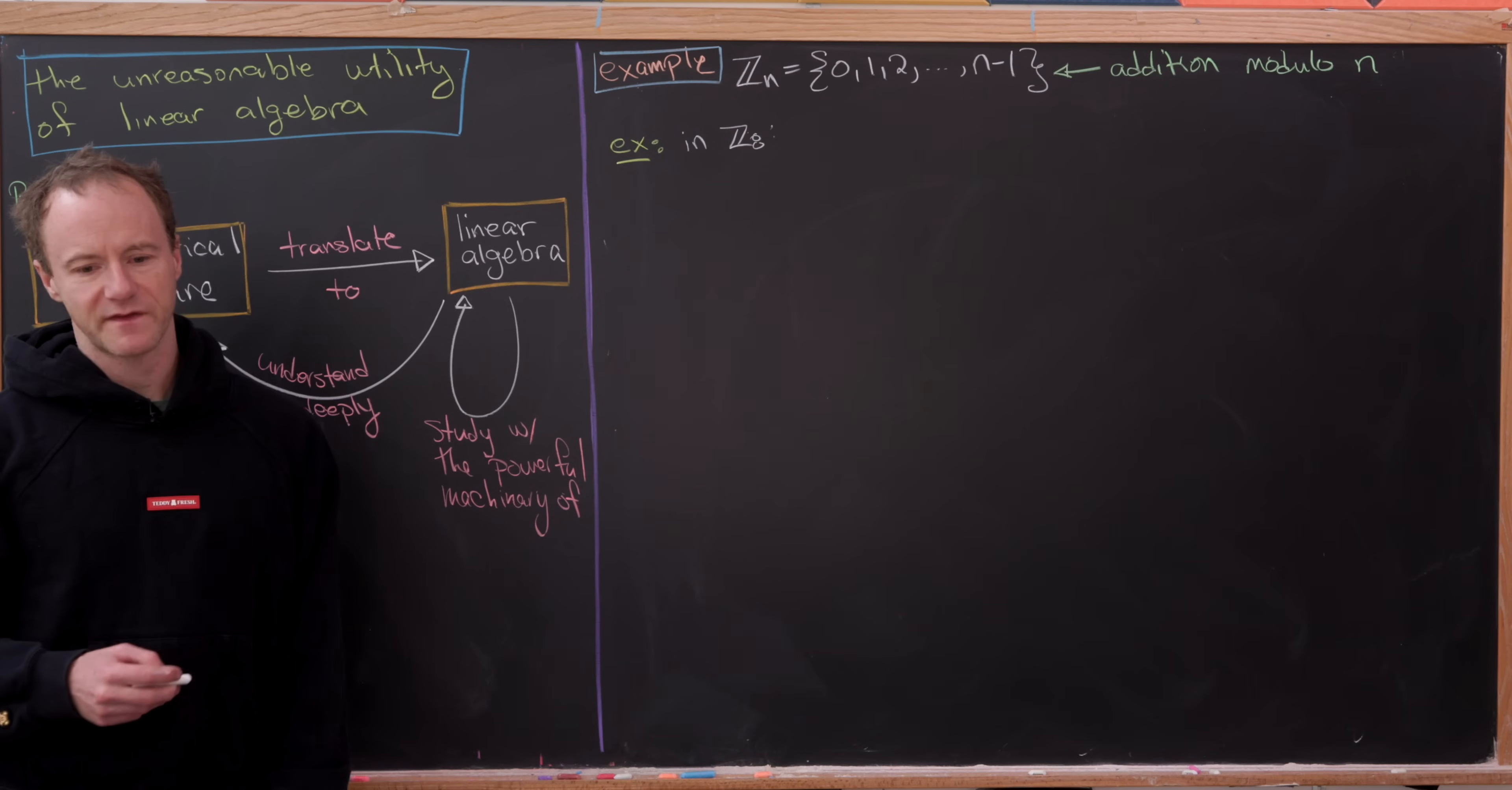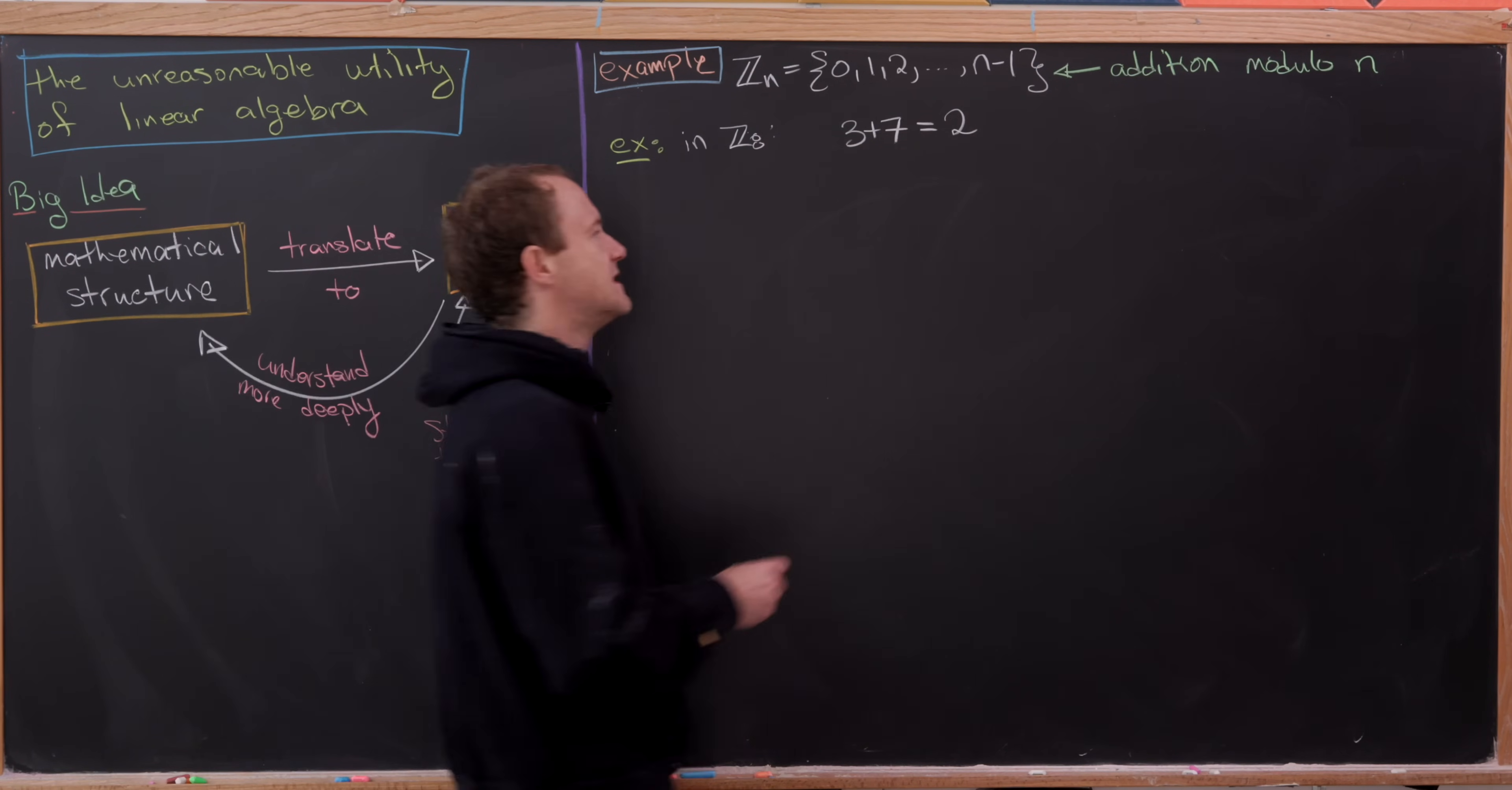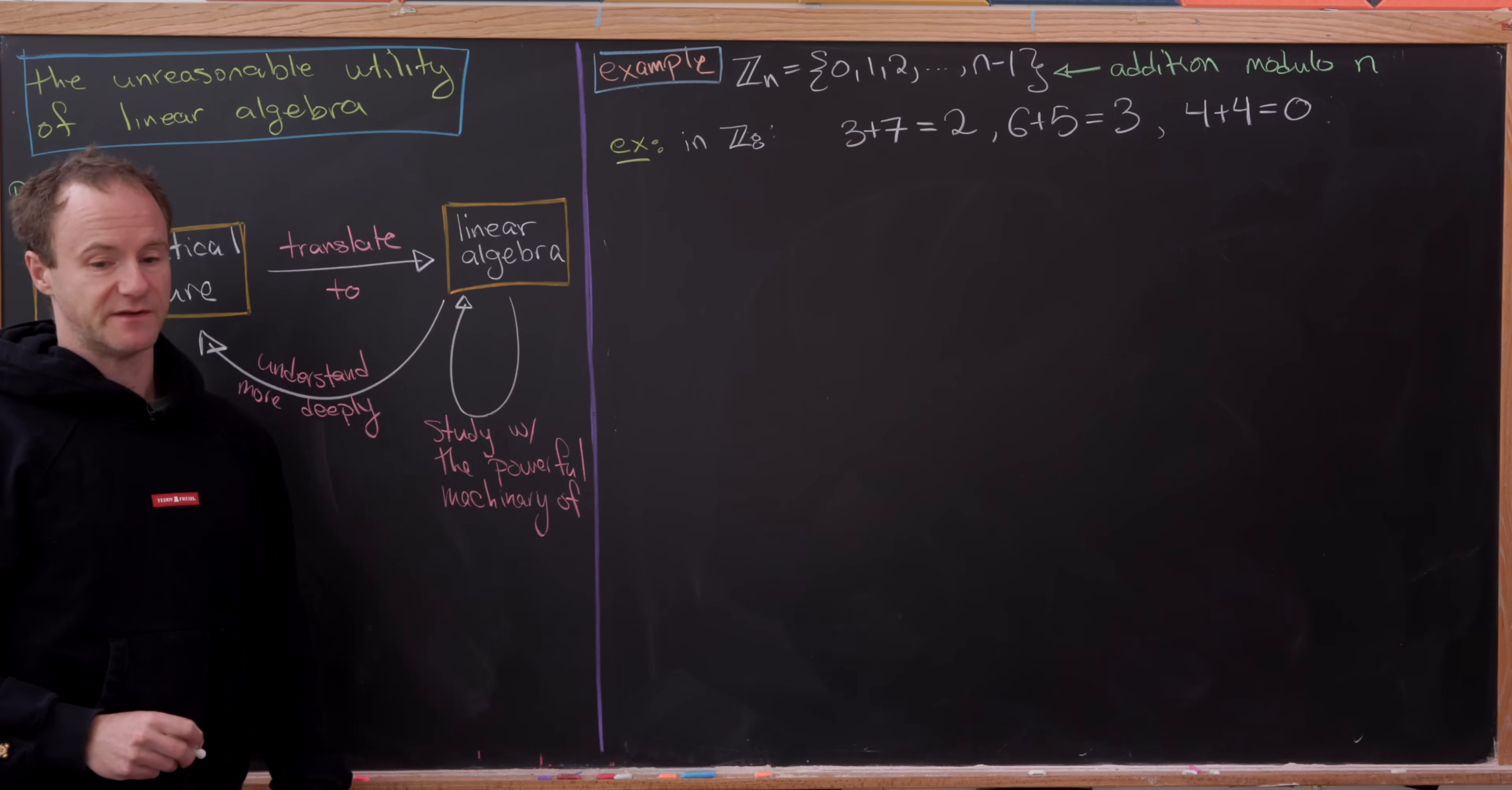So, for example, so that we're all on the same page, inside of Z8, we have 3 plus 7. You might think that that's equal to 10. But if we divide by 8 and keep the remainder, we get the number 2. That's because the quotient would be 1, and then the remainder would be 2. And then similarly, 6 plus 5, that looks like 11, but mod 8 is 3. And then finally, if we look at something like 4 plus 4, well, that's going to be 8, but that's equal 0 mod 8, because it's a multiple of 8.